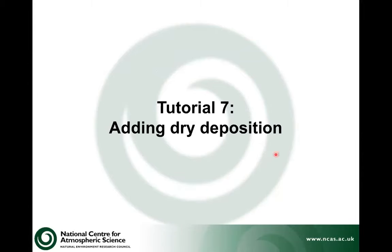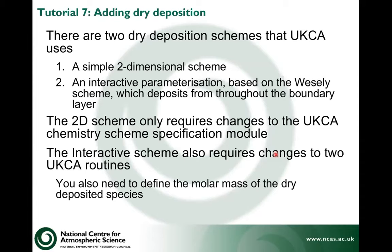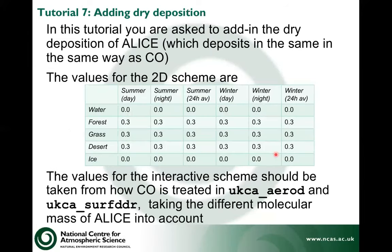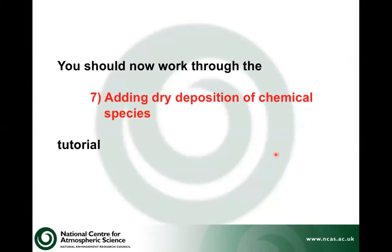Now we need to think about adding dry deposition. There are two dry deposition schemes in UKCA: a simple two-dimensional scheme, and an interactive parameterization which deposits throughout the boundary layer or over the surface. The 2D scheme only requires specific changes to the chemistry module you edited in the last tutorial. The interactive scheme requires changes to two other UKCA routines, and you also need to define the molar mass of the dry deposited species. You've got to add in the dry deposition of Alice — in this example it deposits in the same way as CO. The values of the interactive scheme can be duplicated from what's done for CO in these two UKCA routines.